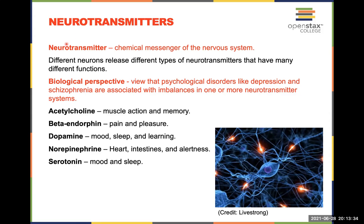Neurotransmitters are the chemical messengers of the nervous system. Different neurons release different types: dopamine, norepinephrine, serotonin, acetylcholine, beta-endorphins, and many more. The biological perspective in psychology holds that disorders like depression and schizophrenia are associated with imbalances in one or more neurotransmitter systems, as well as other physical aspects of the brain. This will be discussed further in chapters 15 and 16.